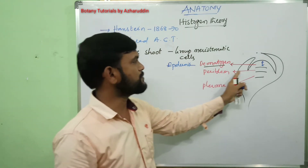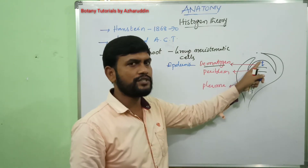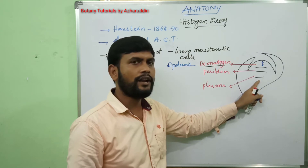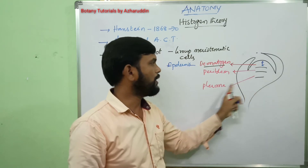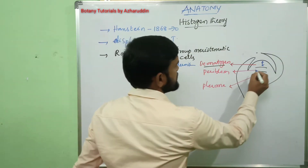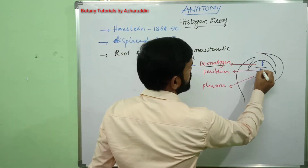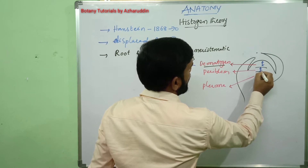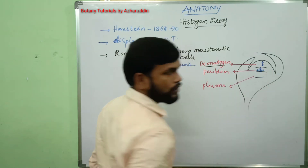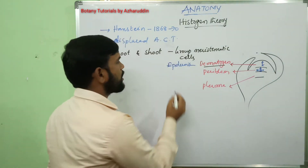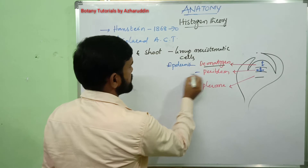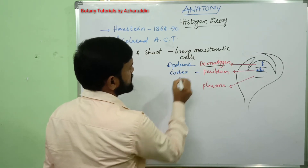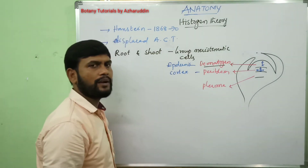The second zone is periblem, which is present between dermatogen and plerome. In periblem, cells divide both anticlinally and periclinally to form cortex in the plant body.